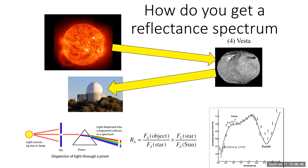Here is a visible spectrum of Vesta taken in 1970 by Tom McCord and his collaborators. You can see Vesta's reflectance spectrum is actually very similar to a eucrite in how it reflects light. This was a huge discovery at the time because Vesta — one of the largest asteroids in the asteroid belt — has a reflectance spectrum that matches a particular type of meteorite. Vesta is probably the best case where we can link an asteroid with meteorites, as the spectrum is very unique and matches meteorites on Earth very well.